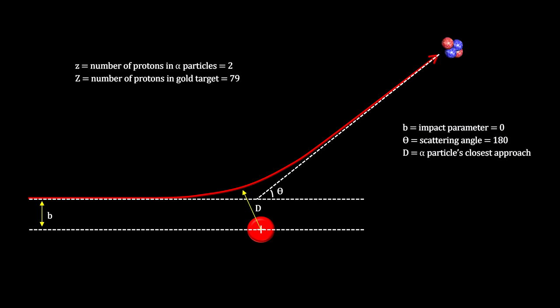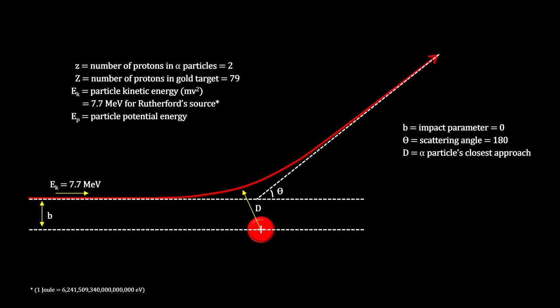The number of protons in the alpha particle is 2, and the number of protons in gold is 79. The energy of the naturally occurring alpha particles used by Rutherford were 7.7 million electron volts.